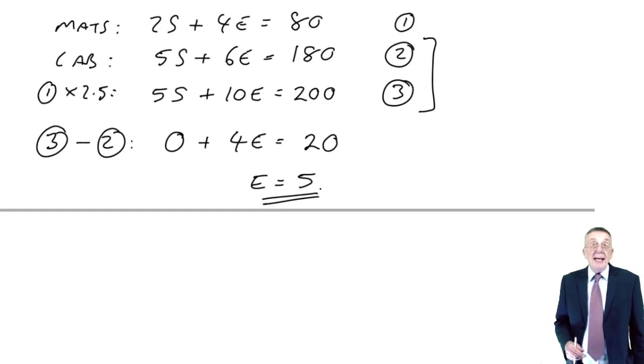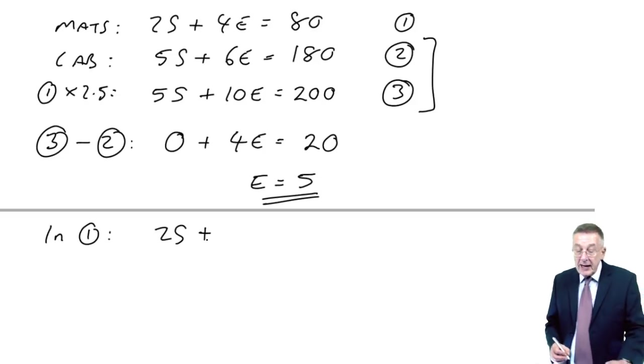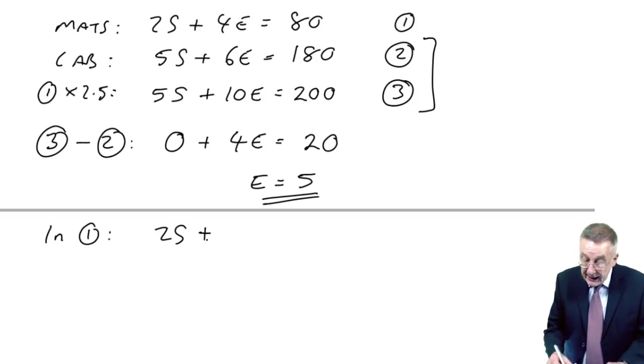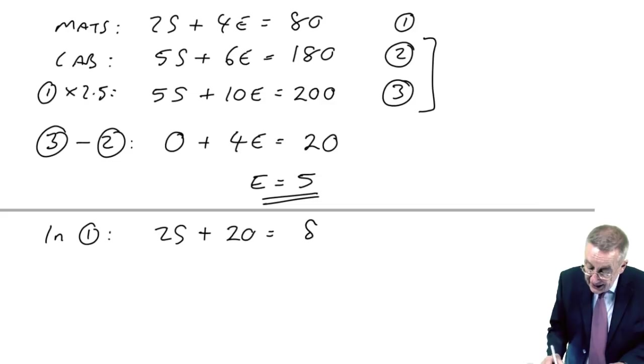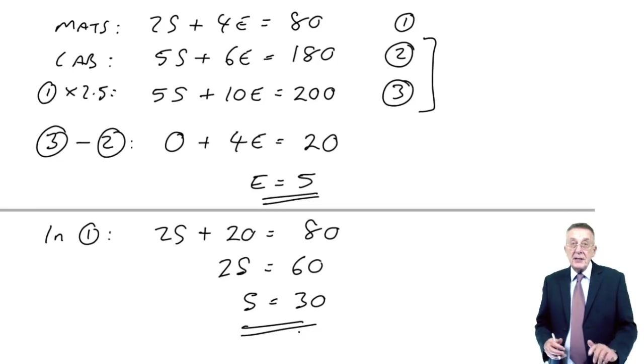And now I know what e is, I can go to either of the equations and work out s. If I go to the first equation, 2s plus 4e, well e is 5, so 4e is 20, is 80. Subtracting 20 from both sides, 2s is 60. S, therefore, equals 30.